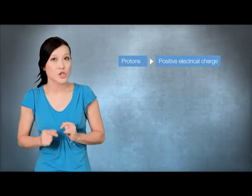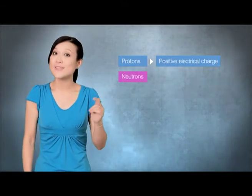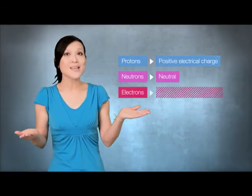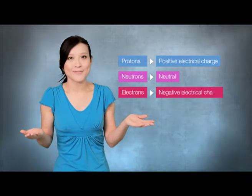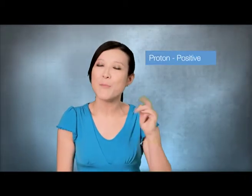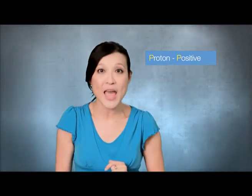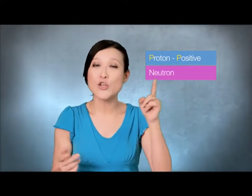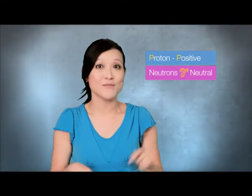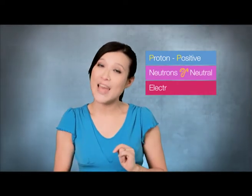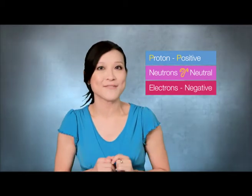Most of the questions will be based on the properties of these subatomic particles. Protons have a positive charge. Neutrons are neutral and electrons are negative. It's easy to remember that proton and positive both begin with P, and neutron sounds like neutral, so electron must be negative.